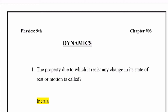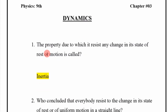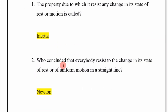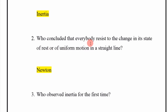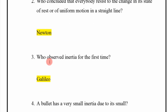Assalamu alaikum, hello friends and welcome to the next lecture of 9th class physics. Chapter 3: Dynamics. The property due to which a body resists any change in its state of rest or motion is called inertia. Newton concluded that every body resists change in its state of rest or of uniform motion in a straight line. Galileo observed inertia for the first time.